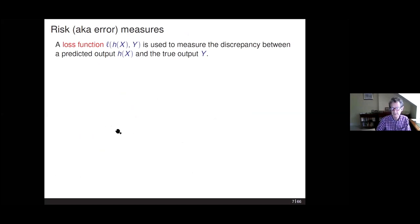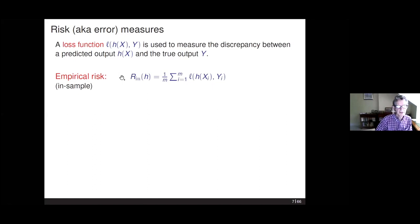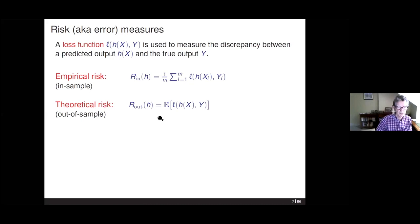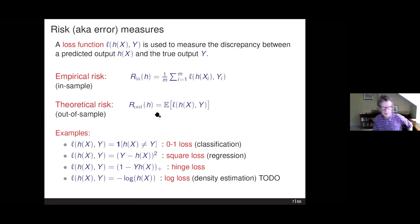The typical measure of performance is through a loss function — a discrepancy between the predicted output and the true output. There's an empirical risk, which is just the average loss on the training data in-sample, and the expected risk on new data — the expectation of the risk on a randomly drawn test point out-of-sample. We'll focus mainly on the 0-1 classification loss, but one can also consider squared loss for regression, hinge loss as a surrogate for the 0-1 loss, and log loss for density estimation.